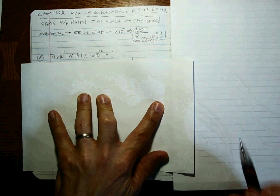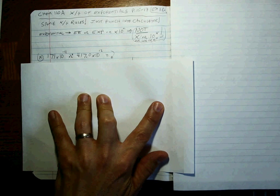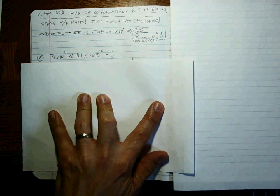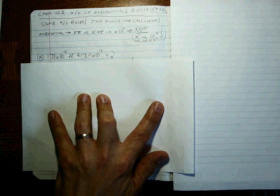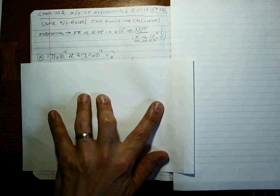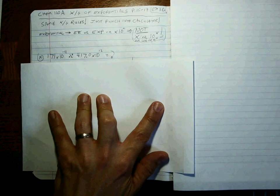Here's an example problem: 171 times 10 to the minus 11th divided by 417.0 times 10 to the 12th. Well, if you remember multiplication and division rules, say that I should be able to tell how many significant digits are in my answer.